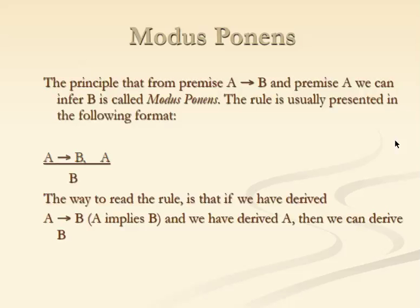We can write modus ponens as a rule. When explaining a valid way of reasoning, it's often presented like a fraction, where the things on top are what we have already established. If we already know — or have proved or assumed — that A implies B, and we have also derived A, then from these two things we conclude B. What is below the line is what we conclude.